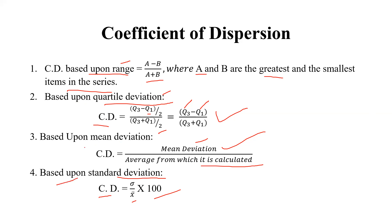So these four measures — coefficient of range, coefficient of quartile deviation, coefficient of standard deviation, and coefficient of variation — are all about relative measures of dispersion. Thank you!